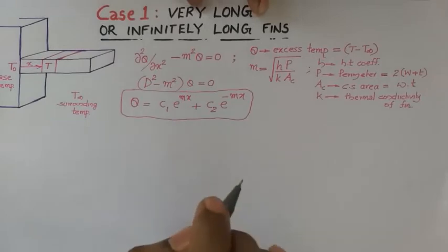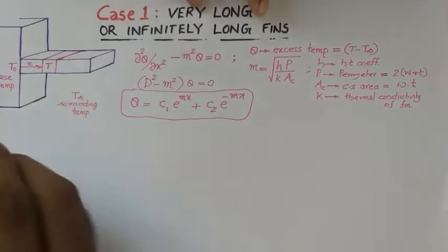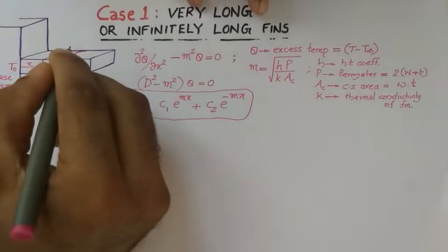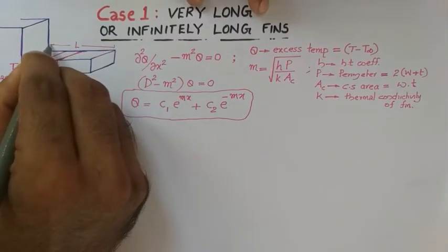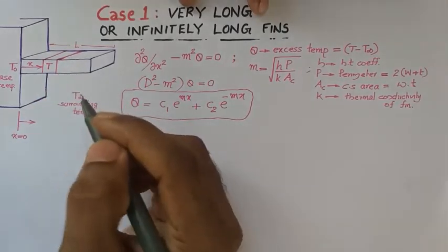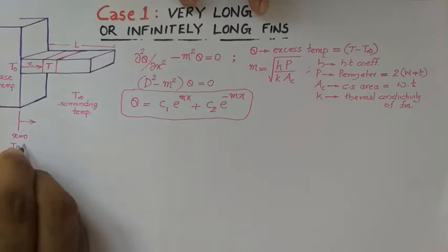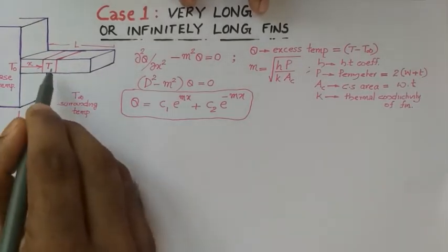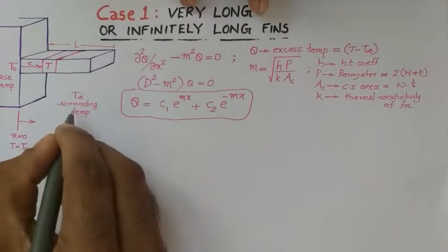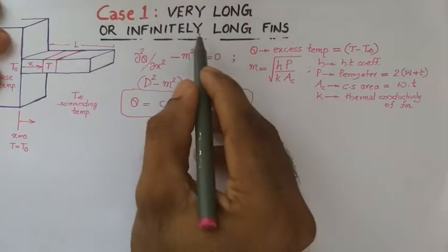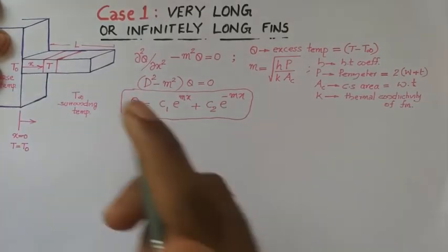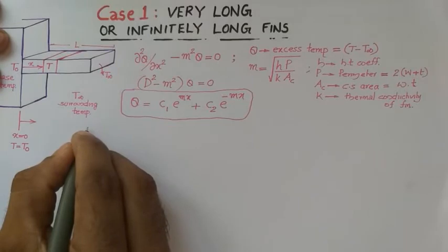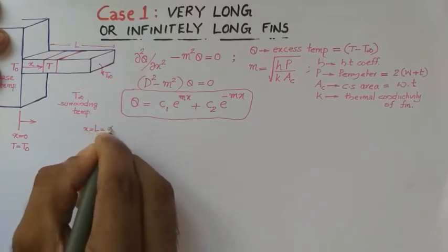For a very long or infinitely long fin, the boundary conditions are set up as follows. At x equal to 0, which is the base surface, and the fin extends to an infinitely long length, so L equals infinity. At the base, the temperature is the base temperature t0.